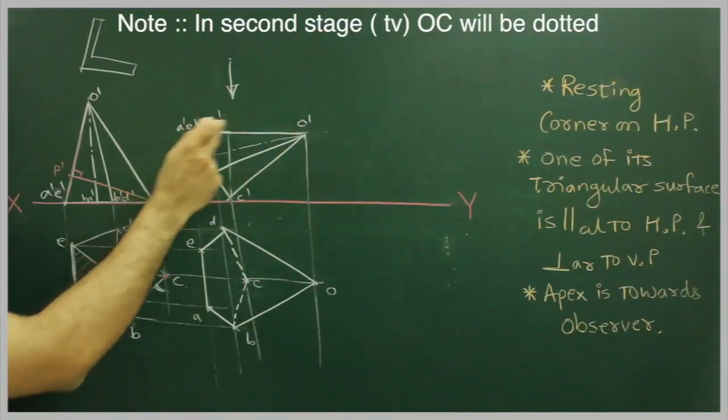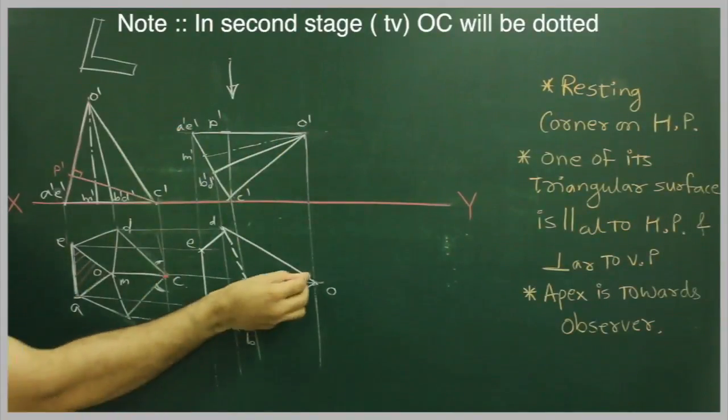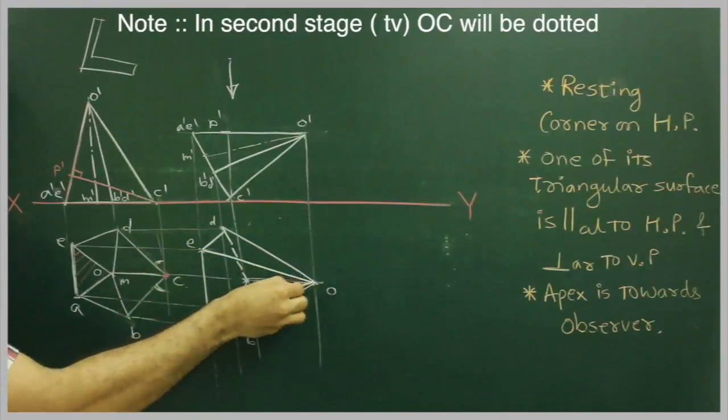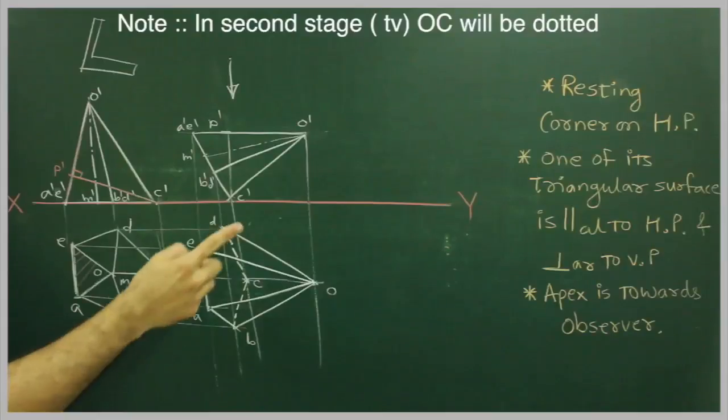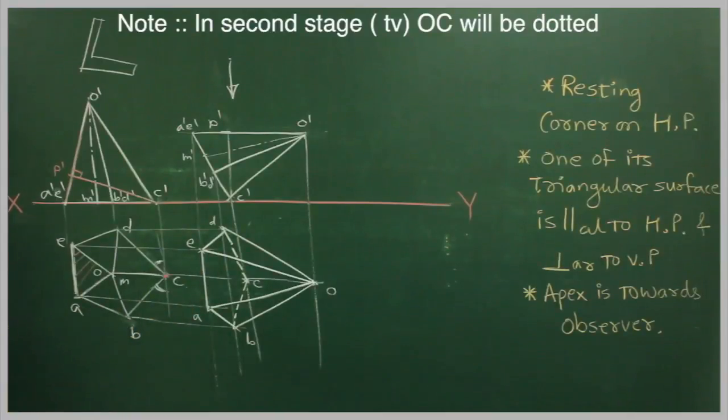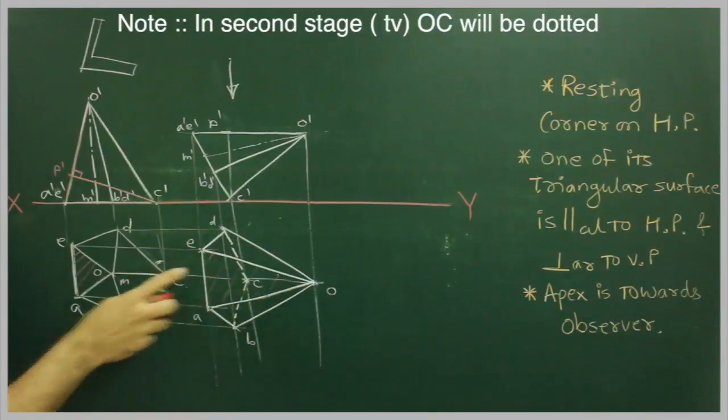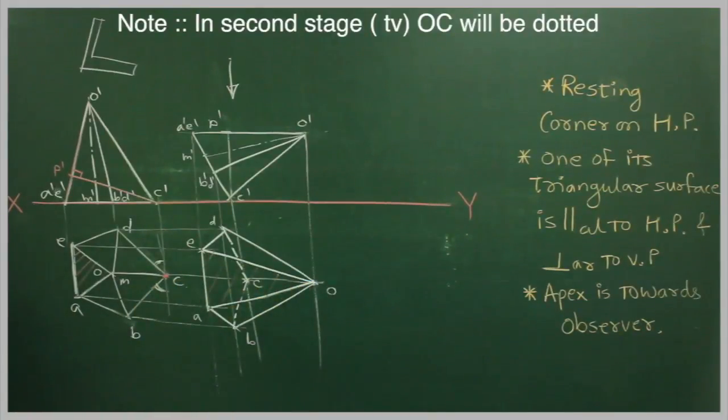Now O', E', O', E' is nearer to the observer. O', E' will be down and O', E' will be down. So we have drawn second stage where triangular surface is parallel to HP and perpendicular to VP. So this is the triangular surface O', E', the triangular surface which is parallel to HP as well as perpendicular to VP.